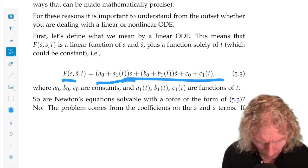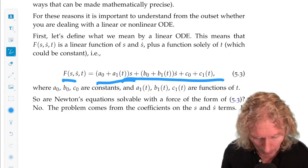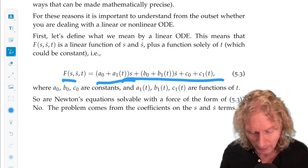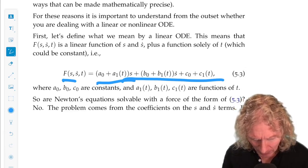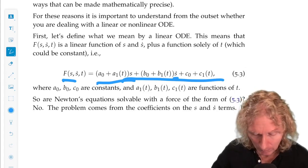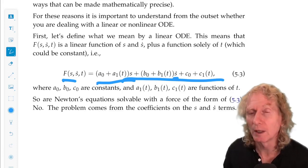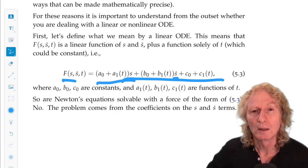it's a linear function of s, a_0 plus a_1 of t. You have a coefficient depending on time. a_0 does not depend on time. I'm just drawing this distinction is important. Depending on s dot, a coefficient b_0 plus b_1 of t, and then a constant c_0 plus a time dependent constant c_1 of t. This is the most general linear function.